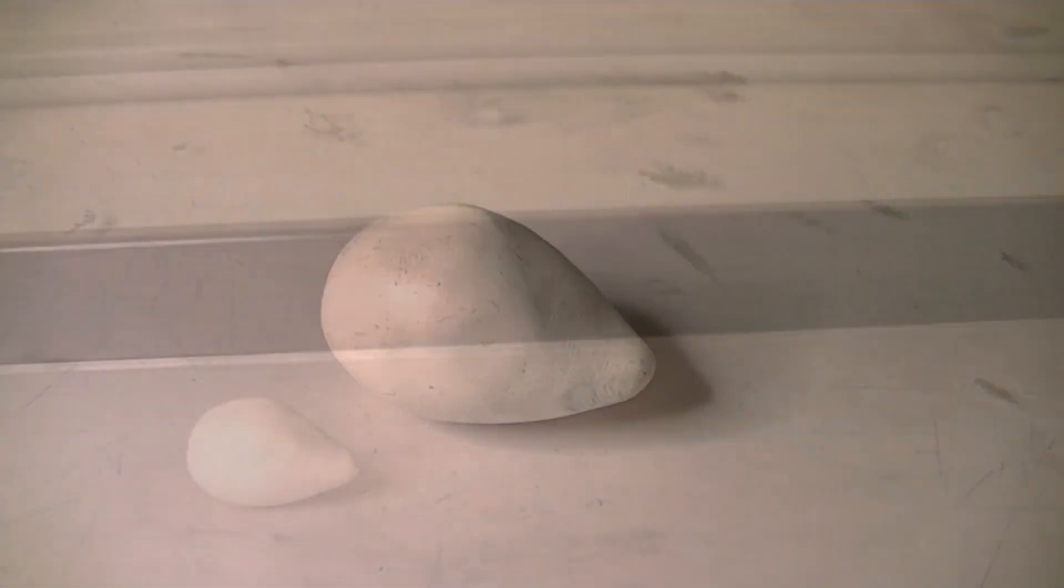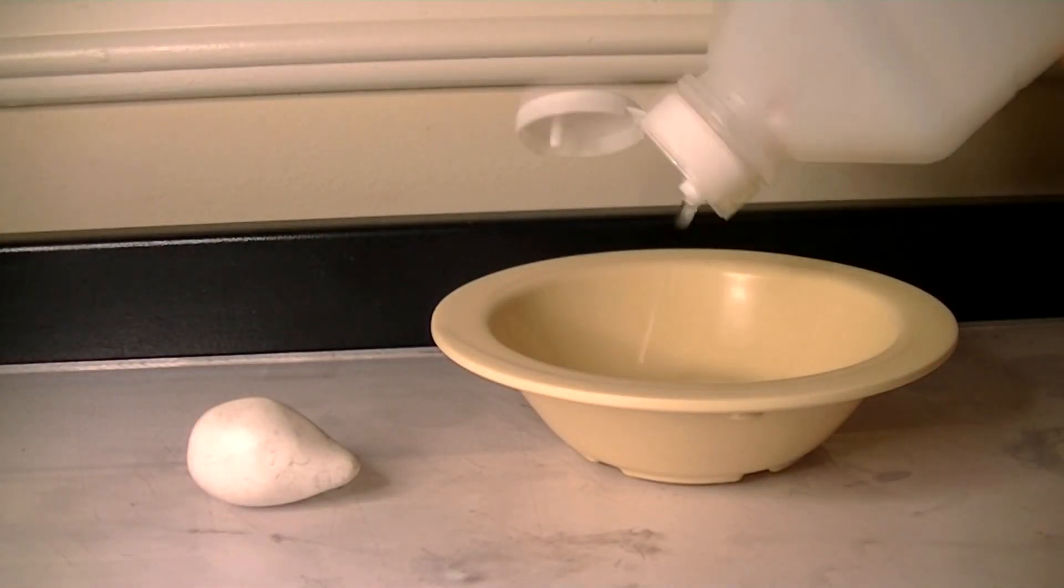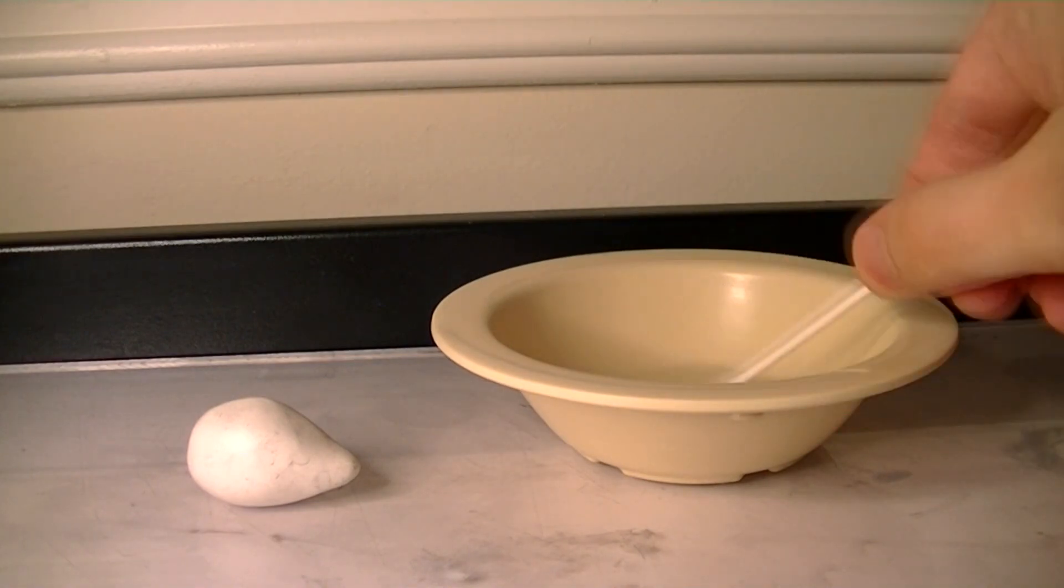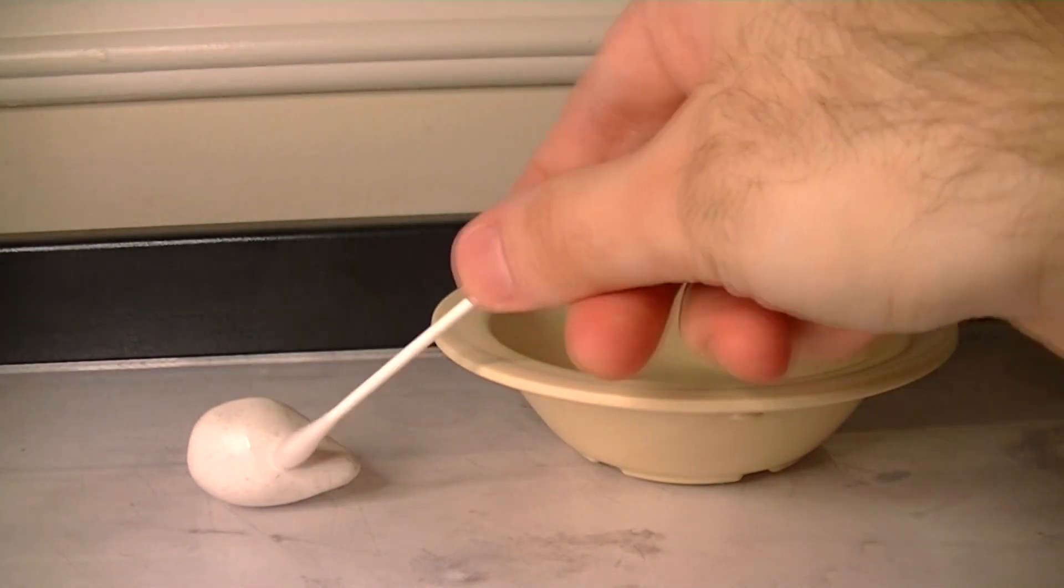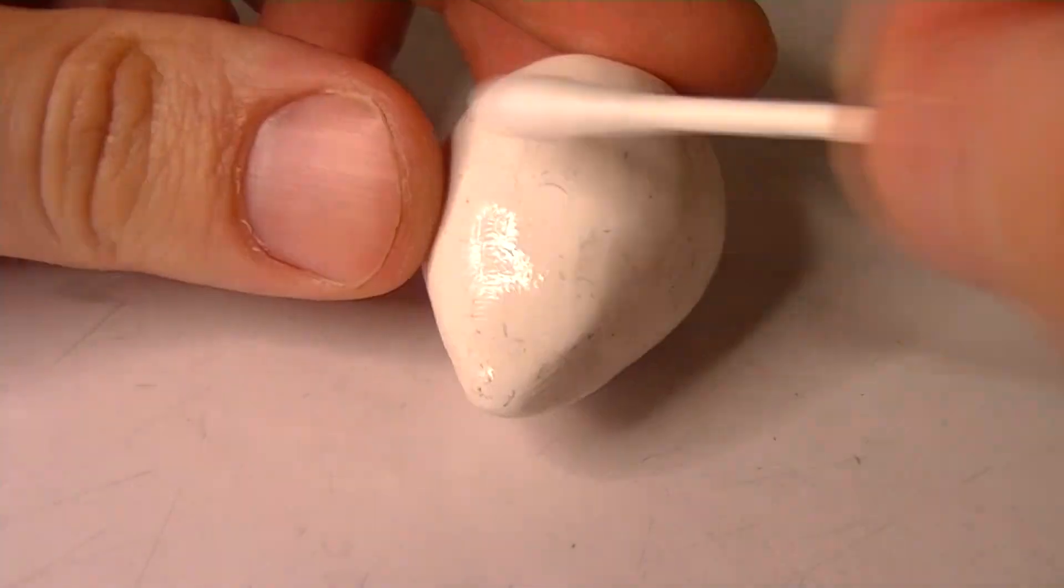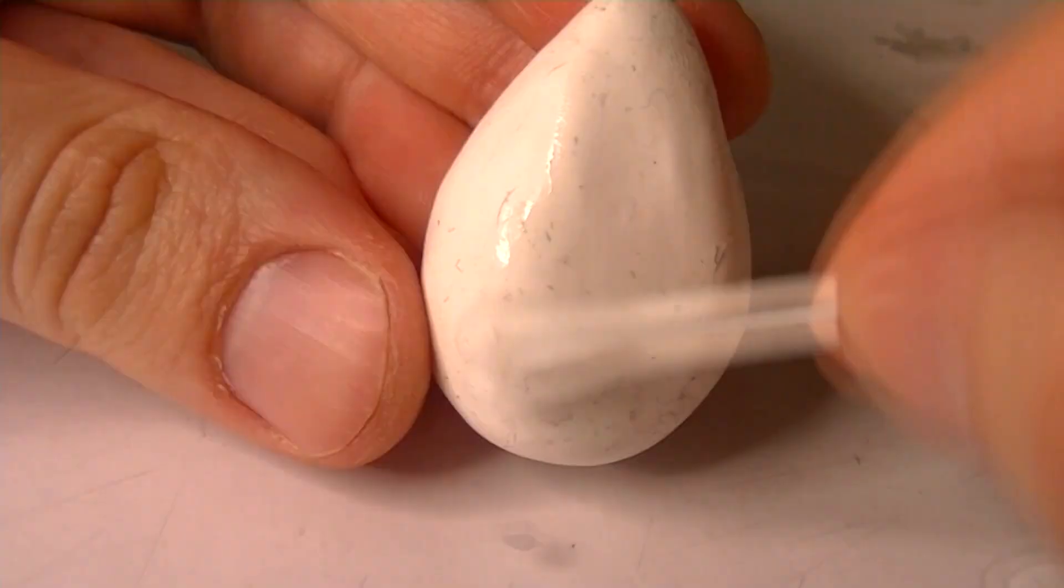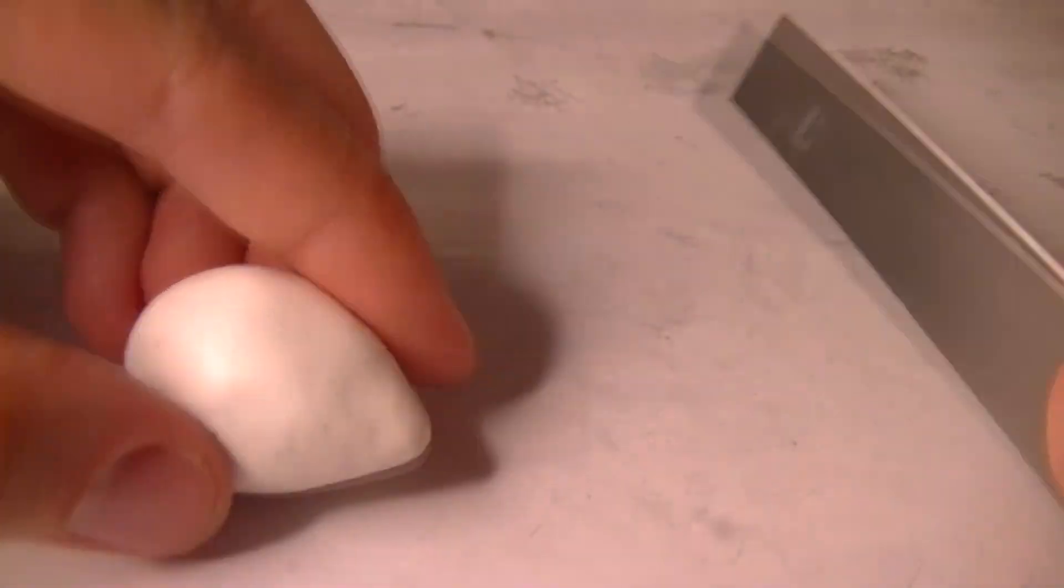So oftentimes when you're handling a lighter color clay for a while, it can get really dirty and a bunch of dust sticks to it. So because of that, we're doing a trick that I've done a few times before, where we just wipe it down with some rubbing alcohol, and that's going to get rid of that layer of dust and make it look a lot cleaner.